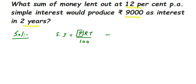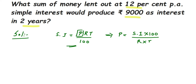Now we have to find out P, so there is one more formula which comes from this SI formula: P is equal to simple interest multiplied by 100, divided by rate into time. This formula comes from the first one — you just cross-multiply, 100 gets multiplied with simple interest, and R and T come in the denominator.